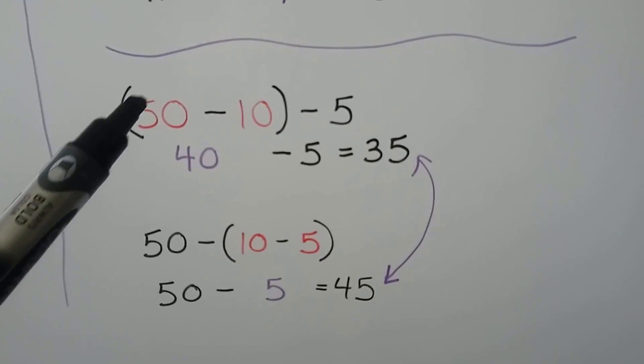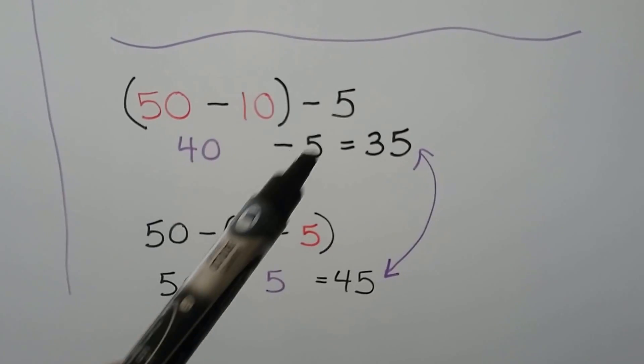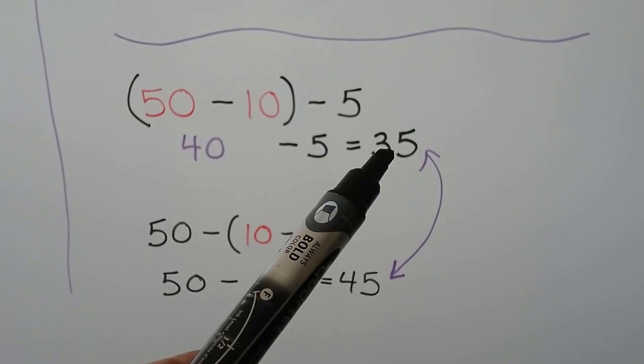We can subtract 50 minus 10, that's a 40. Then we subtract the 5, we get a 35.